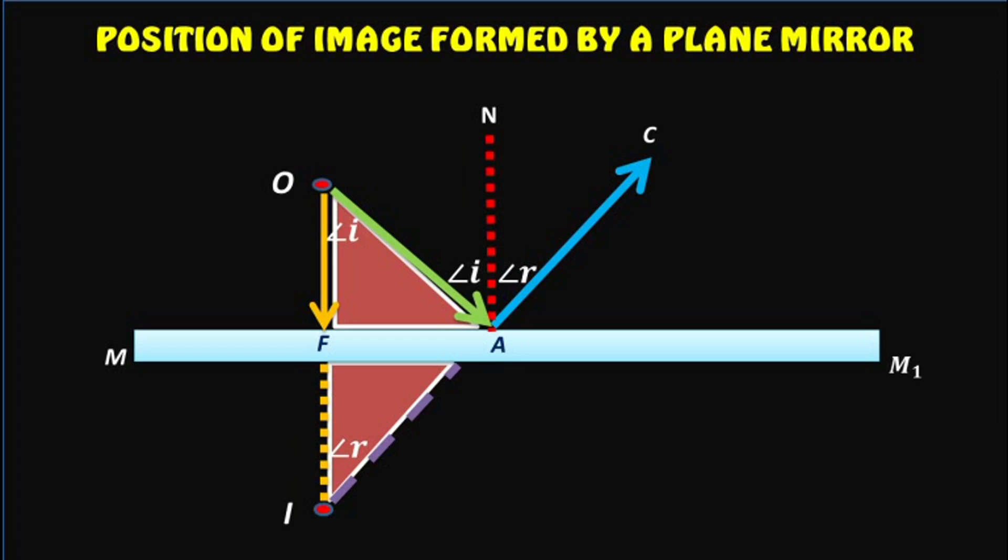And FA is the common side. Therefore, the triangles AOF and AIF are congruent. Hence, we have proved that OF is equal to IF.